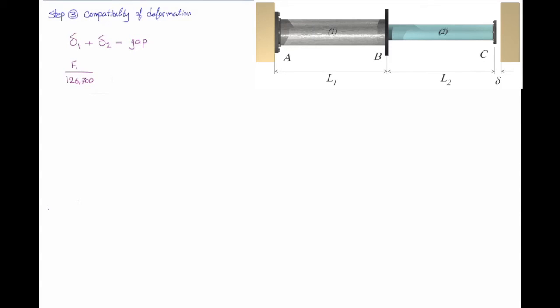So delta 1 is F1 divided by 126,700. Delta 2 is F2 divided by 100,000 and gap is 0.5 millimeters. I can simplify this equation by multiplying every term by the largest denominator. Here I will get F1 plus 1.267 F2 is equal to 63,300. So let's call this second equation.